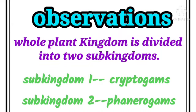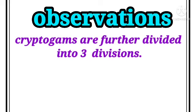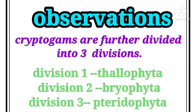Observations: The whole plant kingdom is divided into two sub-kingdoms — first, Cryptogames, and second, Phanerogames. Cryptogames are further divided into three divisions: Division 1 — Thallophyta, Division 2 — Bryophyta, and Division 3 — Pteridophyta.